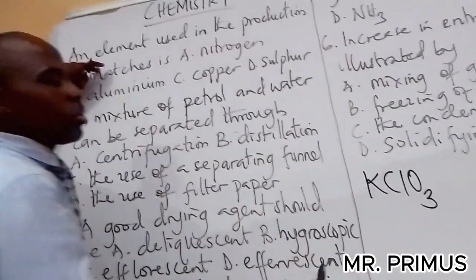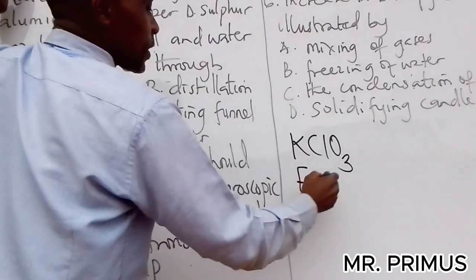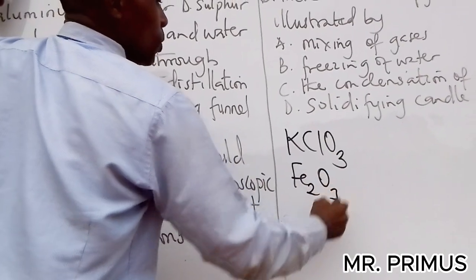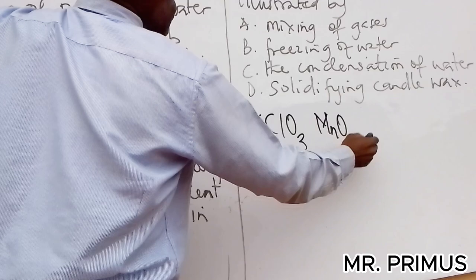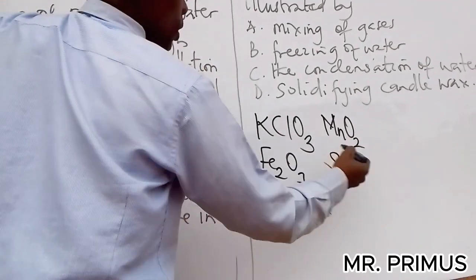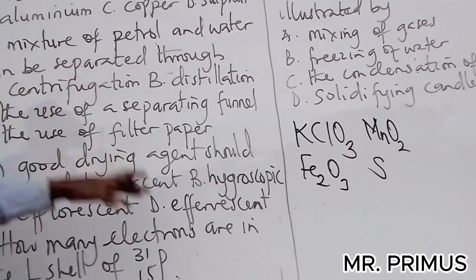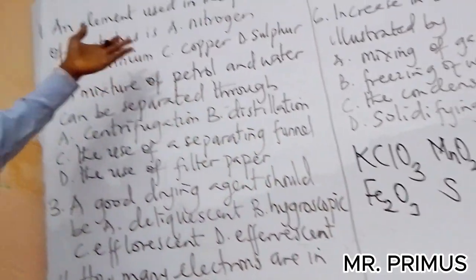Now let me tell you in the production of matches, these are the substances: potassium 3-chloride 5, you use this, you also use iron 3 oxide, we also use manganese 4 oxide.